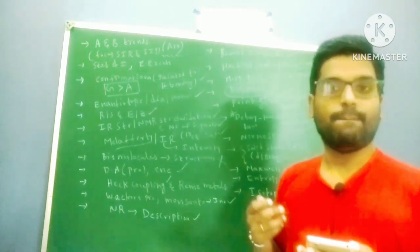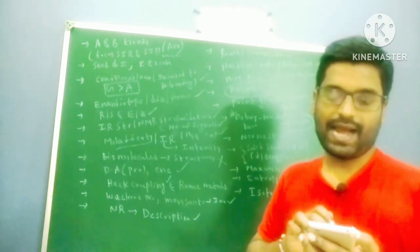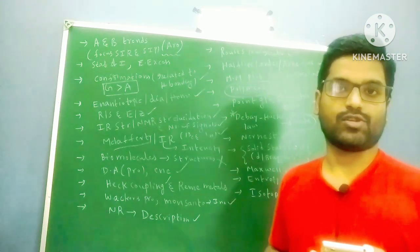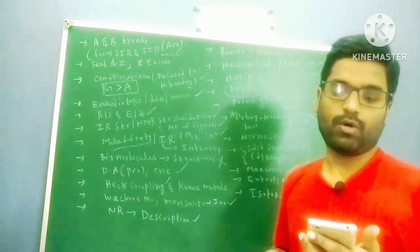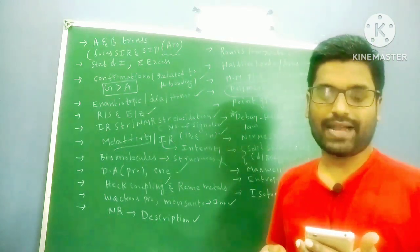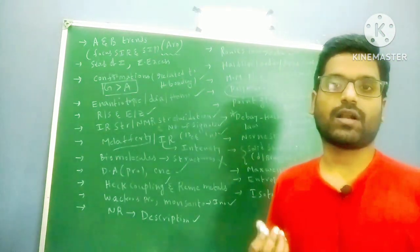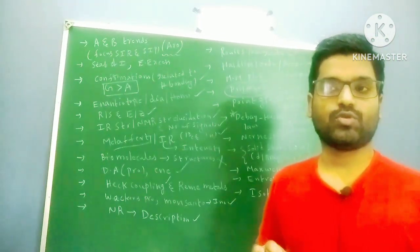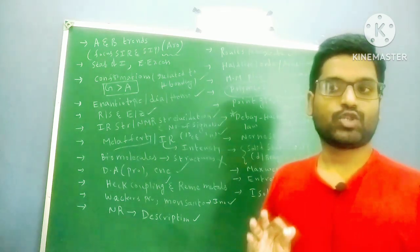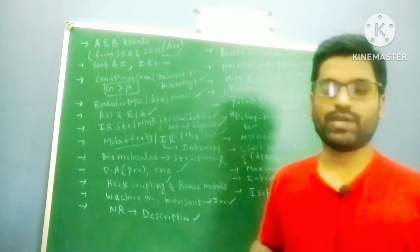Orgel diagrams are very important, magnetic moment is very important, color spectra is very important. You have to remember the energy level orders for square planar and octahedral geometries. For chemical bonding, VSEPR theory and molecular orbital theory are very important. For organometallics, the 18-electron rule is very important — you can see more questions on organometallics and coordination chemistry. Try to cover those two chapters and do every question on coordination chemistry and organometallics.